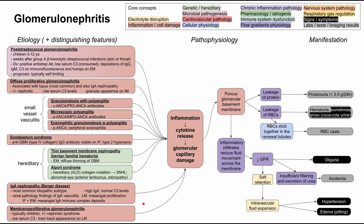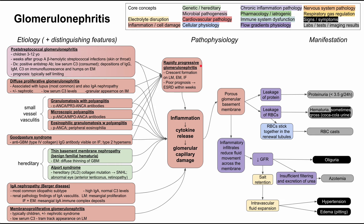Membranoproliferative glomerulonephritis typically occurs in children, similar to post-strep GN, and also presents with nephrotic syndrome like diffuse proliferative GN. It has low serum C3, and the characteristic finding is a tram-track appearance on light microscopy.